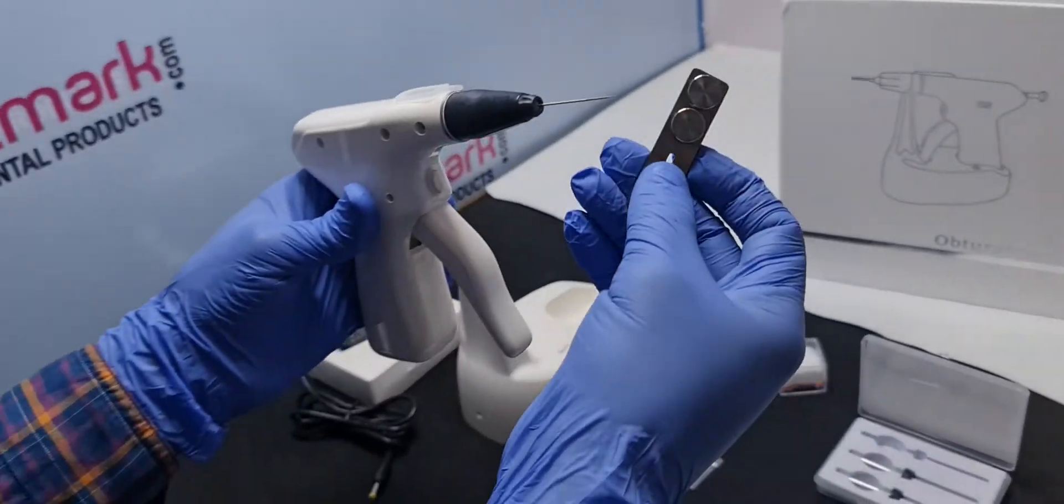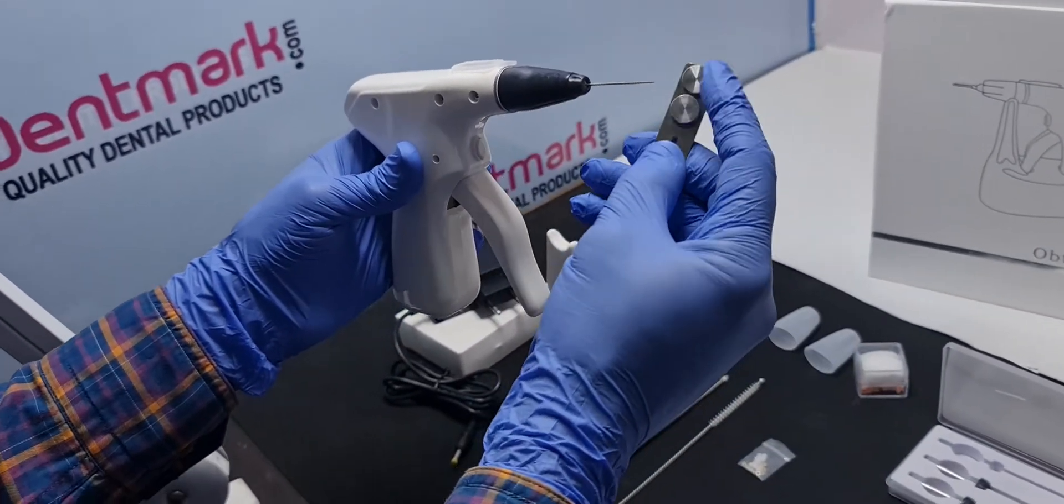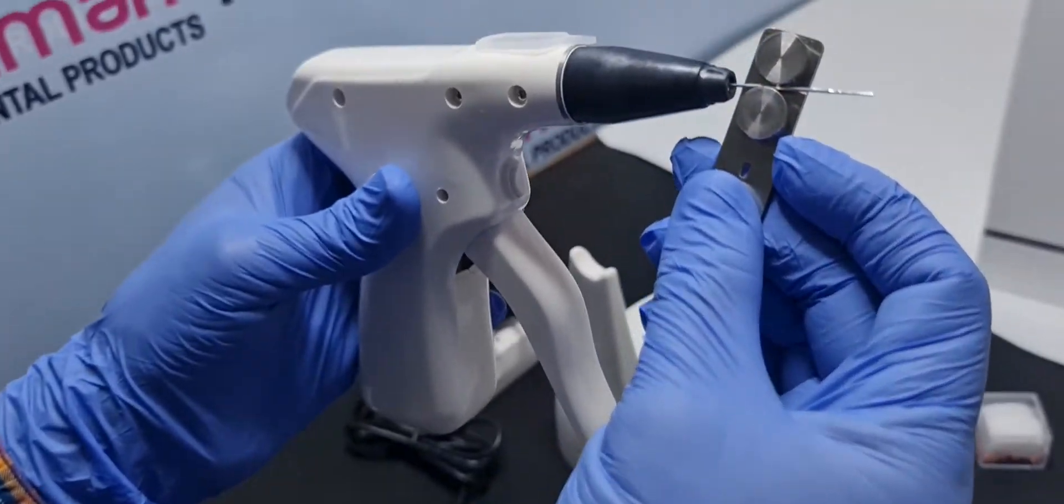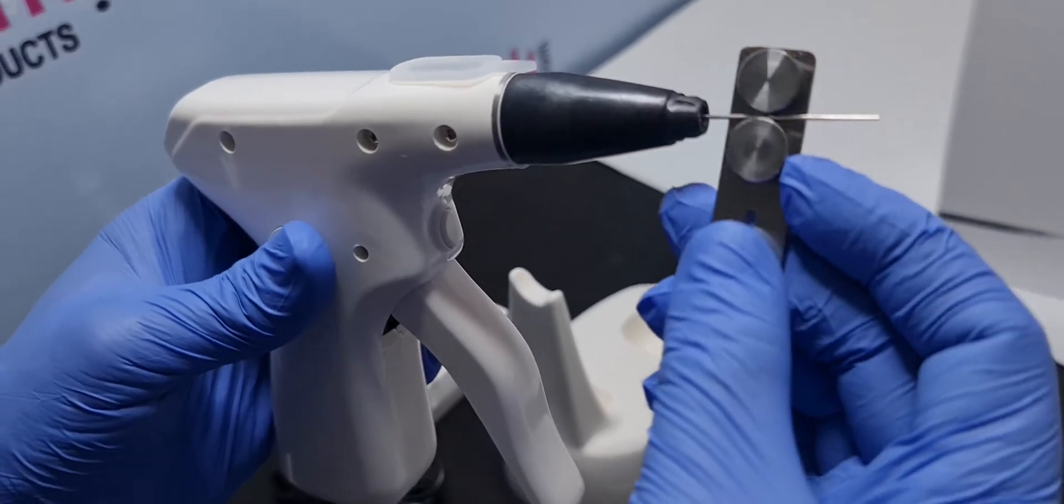And also there are these two circles. It goes like this and you can bend the tip according to your requirement.